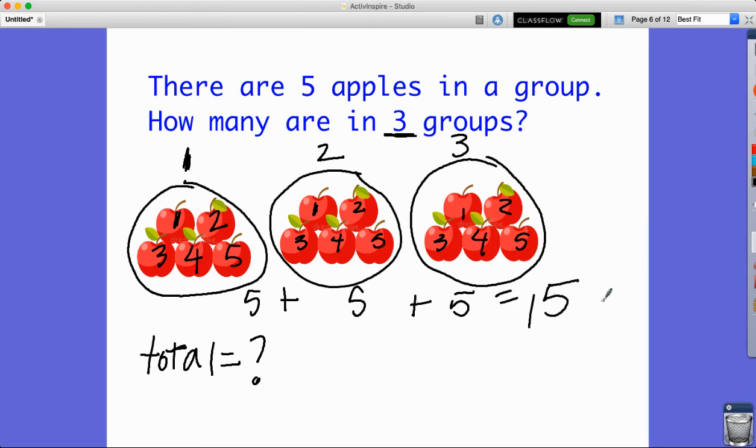Now think about how this problem is best modeled. I didn't know my total, so that usually tells me I'm going to be doing a multiplication problem. I have five apples and want to know how many would be in three groups - that would give me 15.